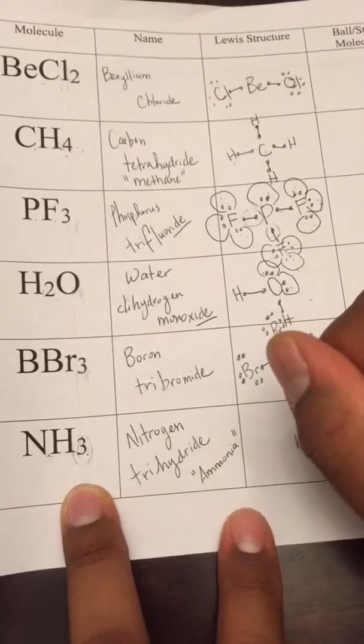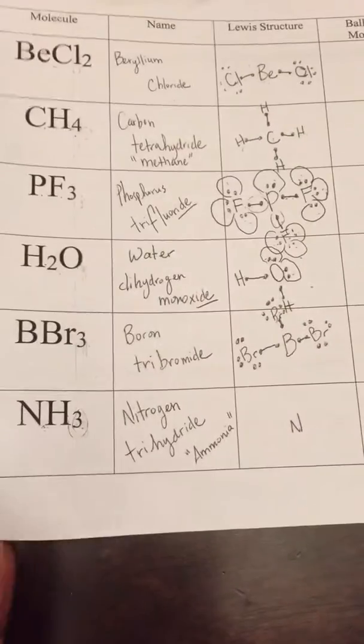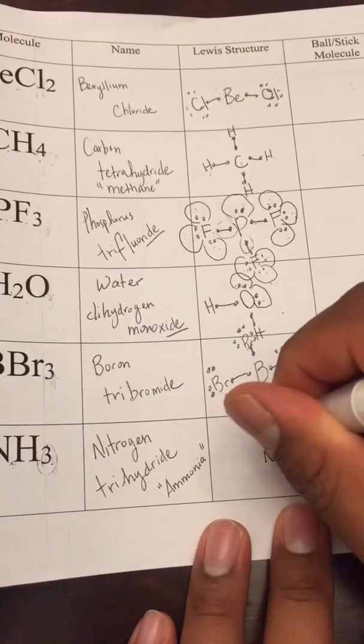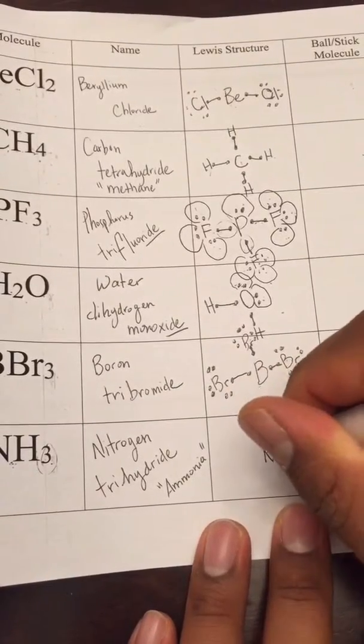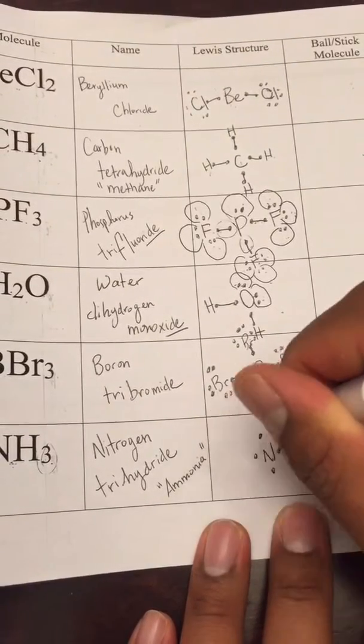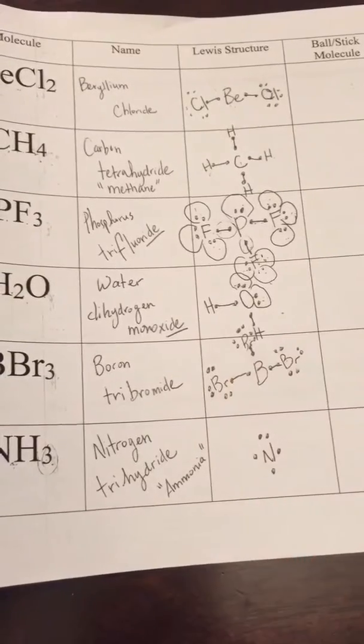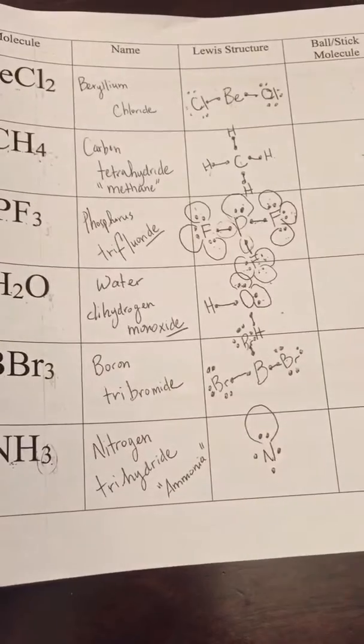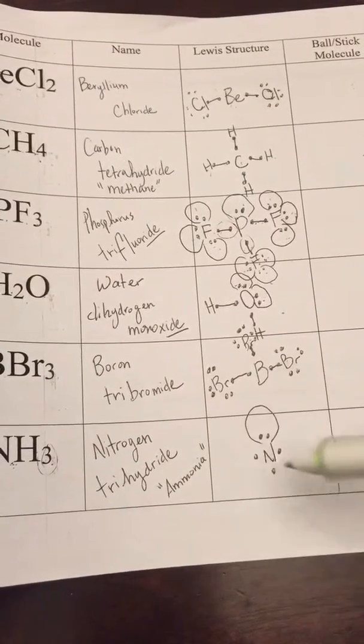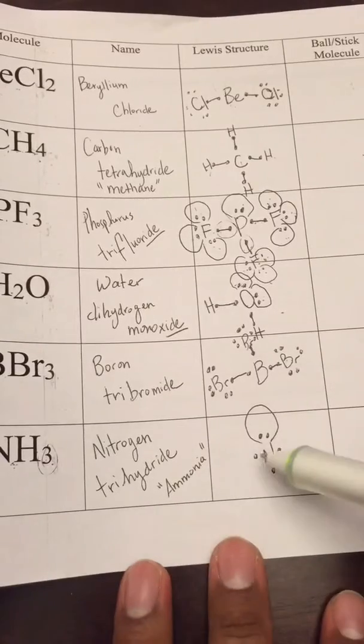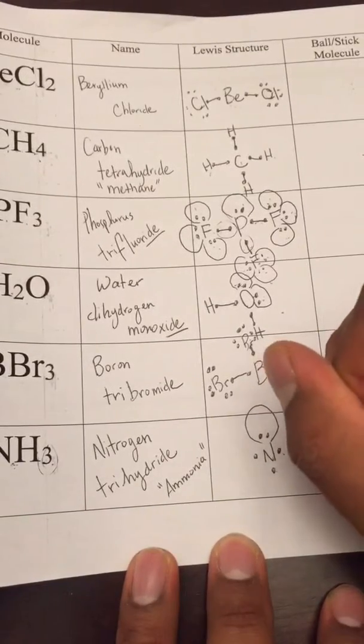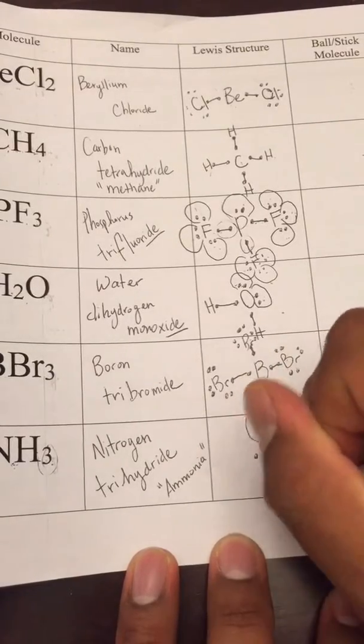For nitrogen, nitrogen has five valence electrons, so we're gonna draw them in. If you notice, we do have a lone pair of electrons. Now what we're gonna do is situate in space where these H's will go, and they will go where the lonely electrons are - put one right there, another right there, right there.